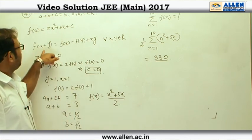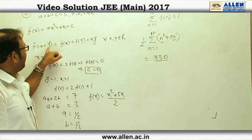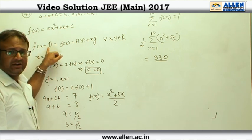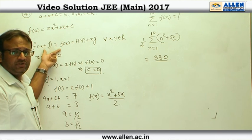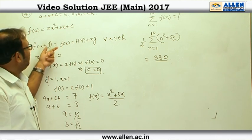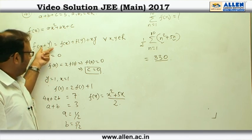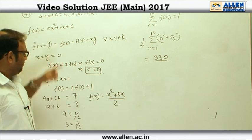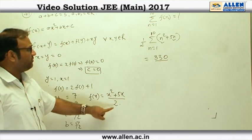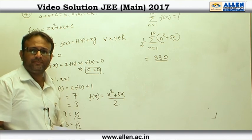Now, in this particular question, we could have gone by another method by finding f'(x) for this particular function using this functional rule, and then by using the value of f(1) and f(0), we could have ended up getting the same function f(x) which we have got here: x²/2 plus 5x/2. So, by any method the question seems to be a simple one.